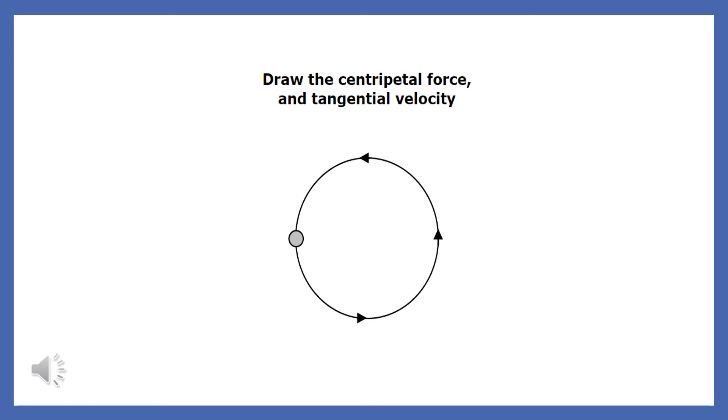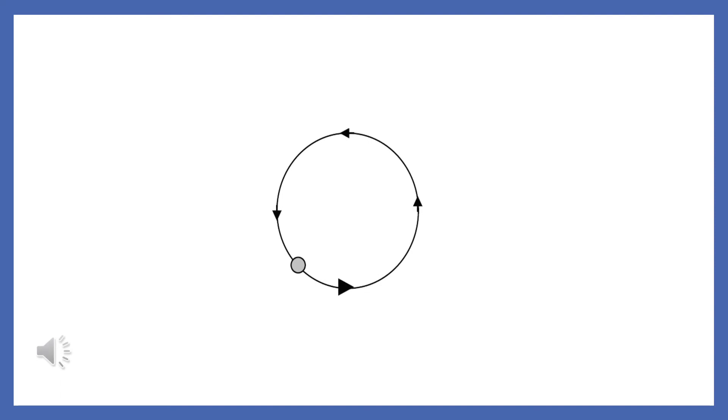Can you predict the direction of the centripetal force? Will the velocity vector go up or down? Once again, the force is centripetal or center directed and the velocity is tangential. These two vectors are perpendicular to each other.